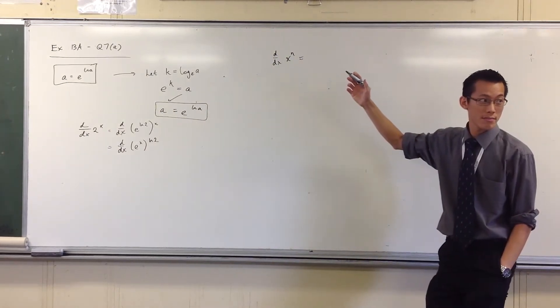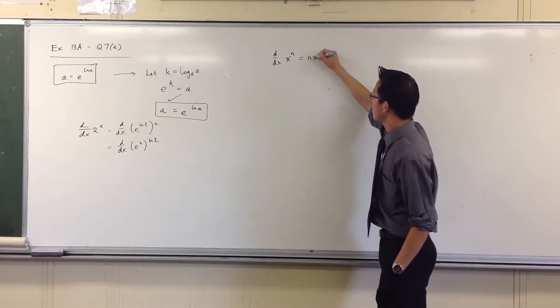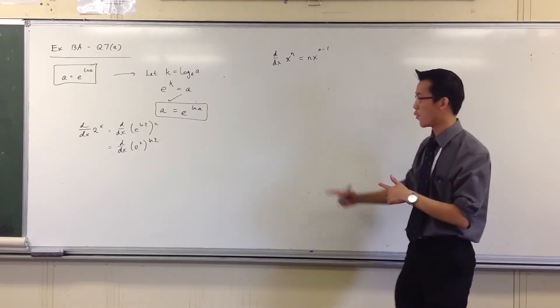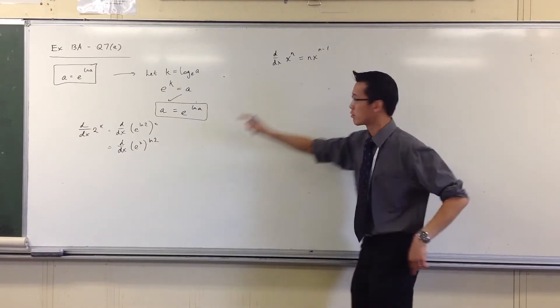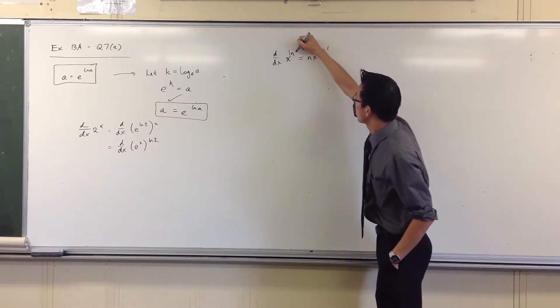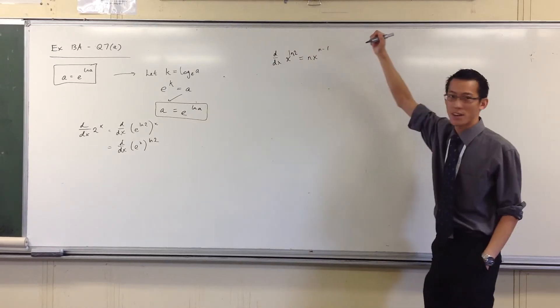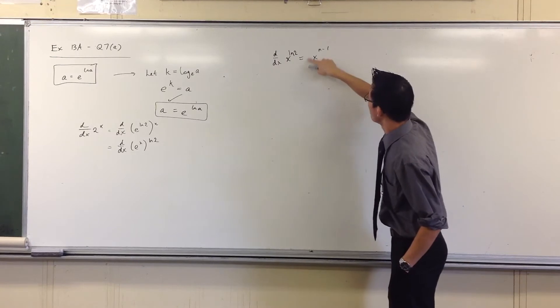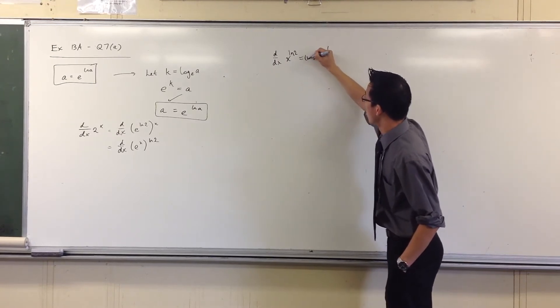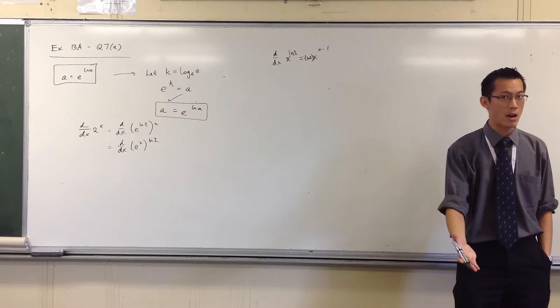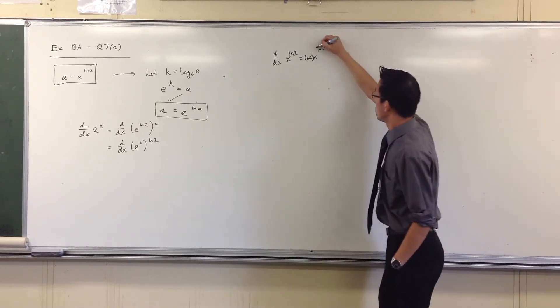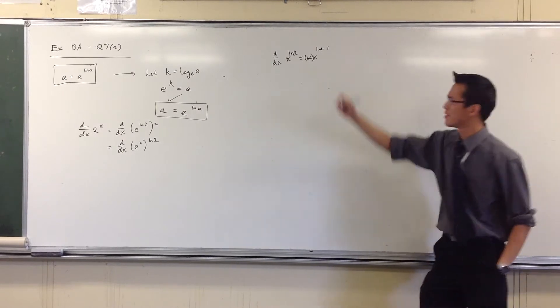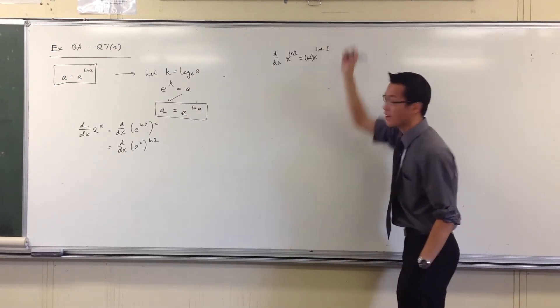So we know that if you're differentiating x to the power of n, then the derivative is nx to the n minus 1. So in this case, right, what you've got is for n, you've got log 2. That's convenient. It's log 2. So what do you get there? Well, the power comes out the front. The power happens to be log 2. And then you take one away from the power. That'd be good. Log 2 minus 1.